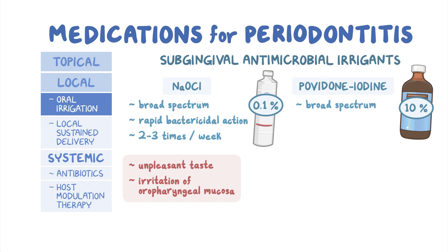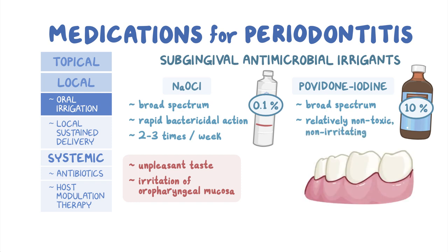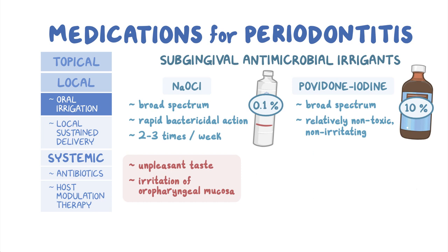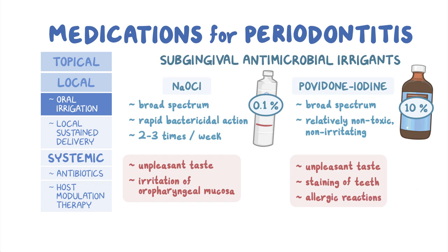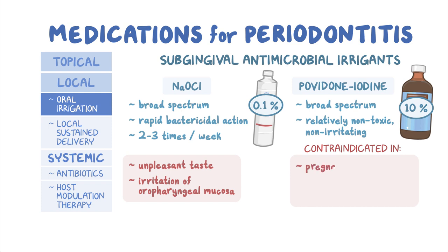Another broad-spectrum antiseptic is a 10% solution of povidone iodine. This is a relatively non-toxic and non-irritating solution that is delivered by dental professionals who use a syringe to deliver the povidone iodine solution into subgingival spaces continuously for five minutes. The main disadvantages include unpleasant taste, staining of teeth, and allergic reactions in some patients. Moreover, povidone iodine is contraindicated in pregnant and nursing women and individuals with thyroid dysfunction and povidone iodine allergies.